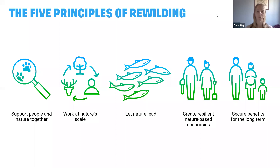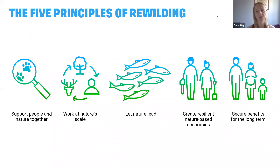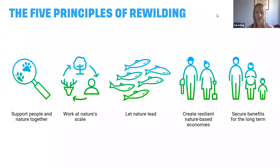Our other three principles might surprise some, but people are very much part of rewilding landscapes — this is not land abandonment. People work within and alongside nature. We have: creating resilient nature-based economies; supporting people and nature together with community engagement; and securing benefits for the long term. When we look at landscape-scale change we often focus on short and medium-term funding windows, but we really need to think long-term, especially when considering the climate emergency as an additional layer of complexity.